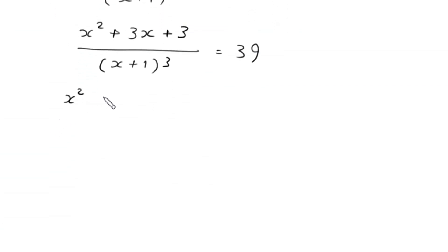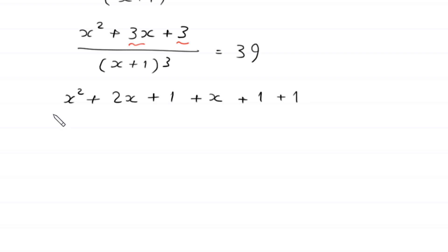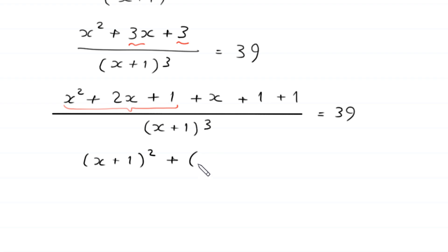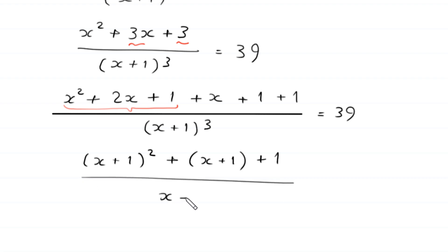Next, x squared plus 3x plus 3. We can write 3x as 2x plus x, and the 3 as (x+1) plus 1 plus 1 plus 1 — that is, (x+1) + (x+1) + (x+1) written more carefully. So the numerator becomes x squared plus 2x plus 1, plus (x+1) plus (x+1) plus (x+1), all divided by (x+1) whole cubed, equal to 39.